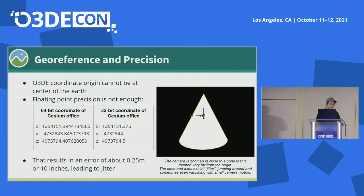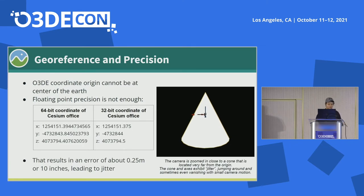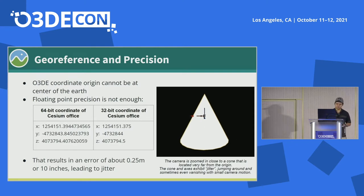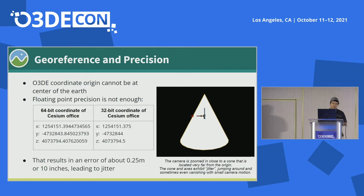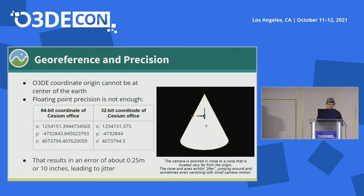Besides being able to render and stream 3D Tiles, we also want the ability to place objects around the world. Precision is very important to us. Like most popular engines, O3DE uses 32-bit floating point internally, so it doesn't have enough precision if you assume the origin is at the center of the Earth. For example, if we store the coordinate of the Cesium office in a 32-bit floating point number, this can result in an imprecise location that may be a quarter meter away from the true location. If we render a mesh at that offset, you may see a jittering artifact where the mesh shakes around even with small camera motion, which is very distracting.